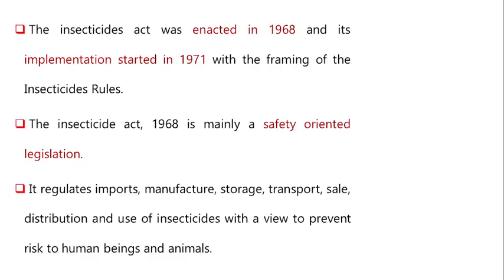The Insecticide Act was enacted in 1968 and its implementation started in 1971 with the framing of the insecticide rules. The Insecticide Act 1968 is mainly a safety-oriented legislation which regulates imports, manufacture, storage, transport, sale, distribution, and use of insecticides with a view to prevent risk to human beings and animals.